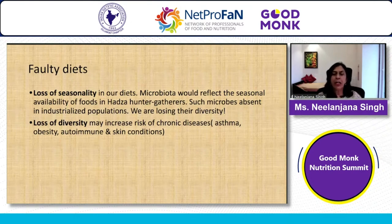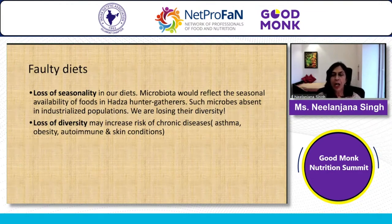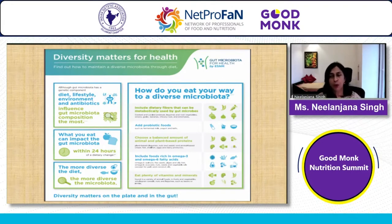We need to eat seasonally and not eat foods like mangoes through the year. Loss of diversity in the microbiome increases the risk of chronic disease. The more diverse the diet, the more diverse the microbiota — diversity on the plate and in the gut both matter. If you achieve diversity on the plate, it is likely to happen in the gut too.